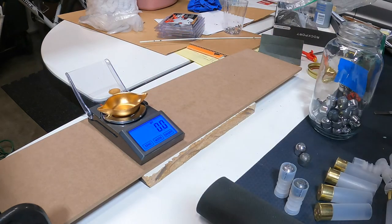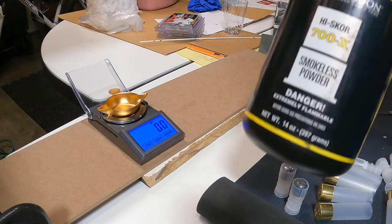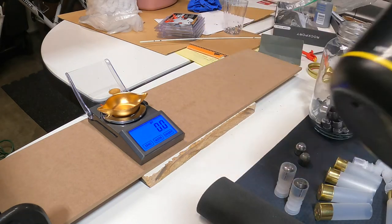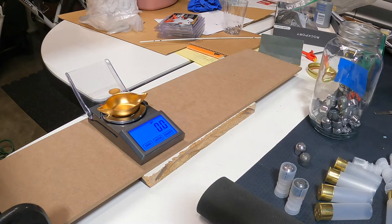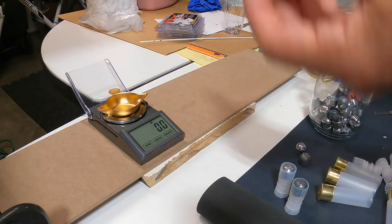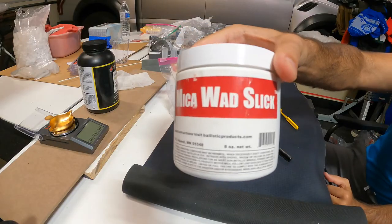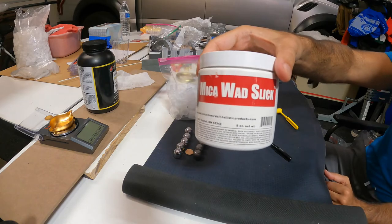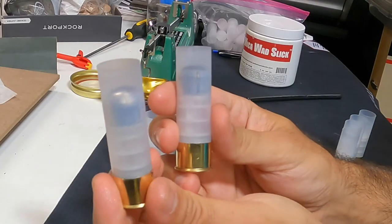The last thing about this load is this is a 700X ballistic products manual. They say use 22 grains, so I'm going to load up about 10 of these. These will look real pretty. We'll use the Lee load all thing. I also like to do is hit my wads with a little bit of this wad slick. So we got one slug just...